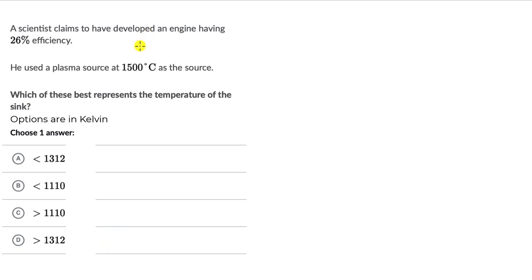Now let's see what the question is saying. Here the scientist develops an engine having 26% efficiency. And the efficiency of a real engine will always be less than the efficiency of an ideal engine. We know what the efficiency of a Carnot engine is, that is 1 minus T2 by T1, which is T2 is the temperature of the sink, T1 is the temperature of the source, and they are both in kelvins.